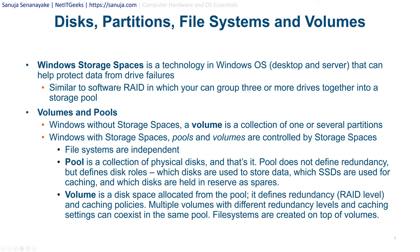The pool defines what space is allocated for user or software data and what space is reserved. Volume is disk space allocated from the pool. Once you have a pool, you create volumes on top of it. The volume defines the redundancy — the RAID level — and caching policies. Multiple volumes with different redundancy levels and caching settings can coexist in the same pool, and file systems are created on top of those volumes.